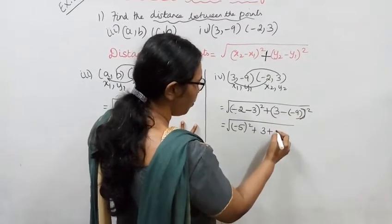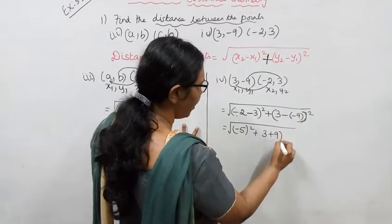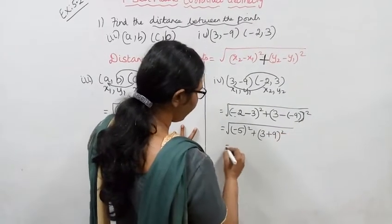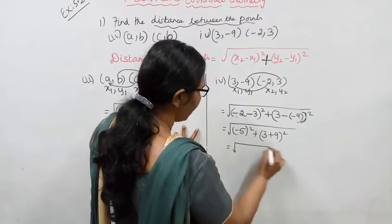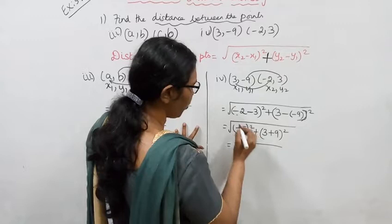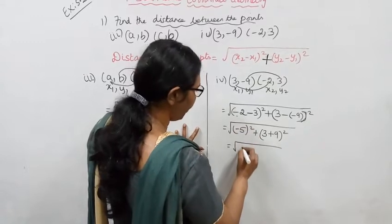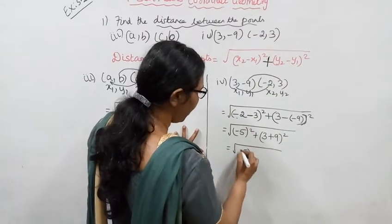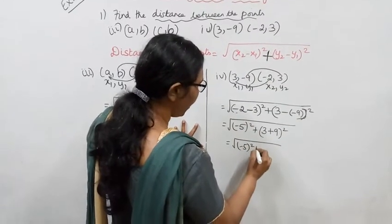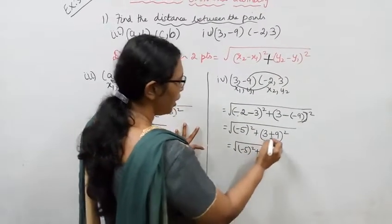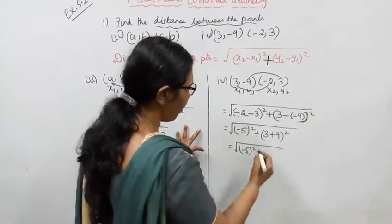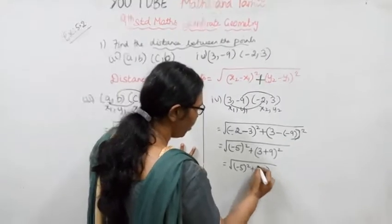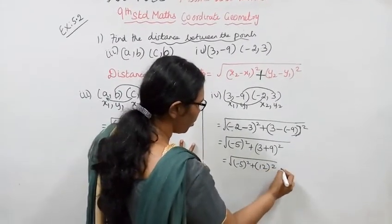Minus into minus gives plus. So we have (minus 5) the whole square, plus 3 plus 9 which gives another 12. That is (12) the whole square.